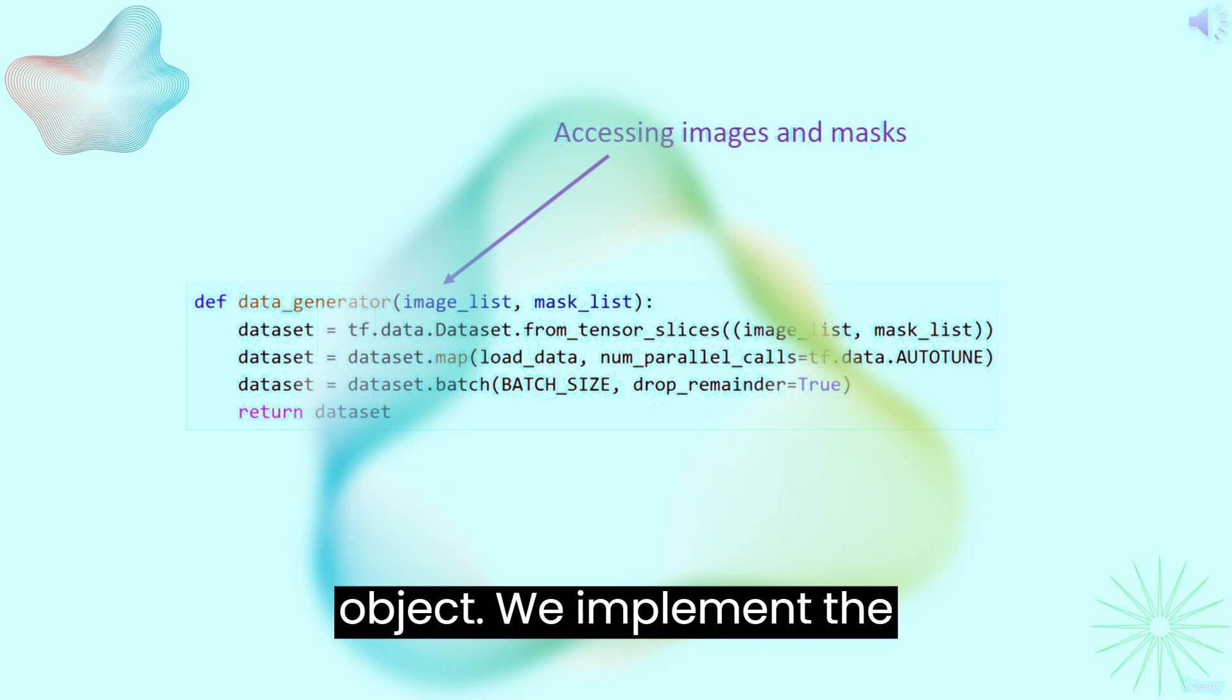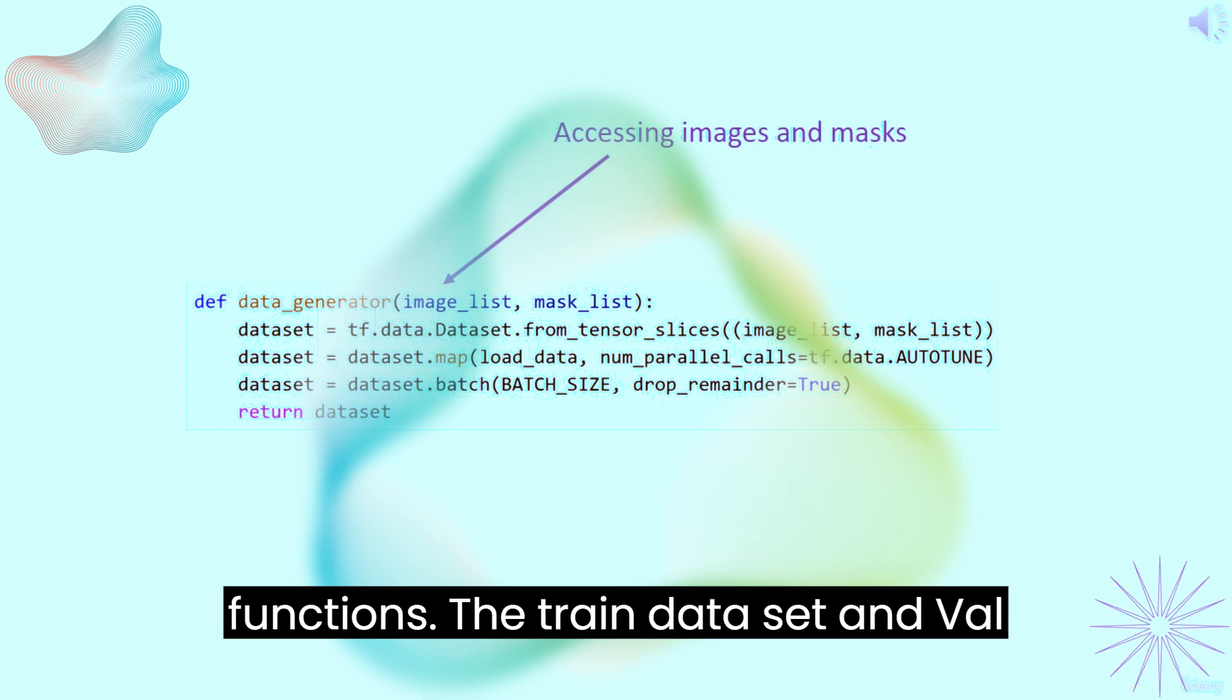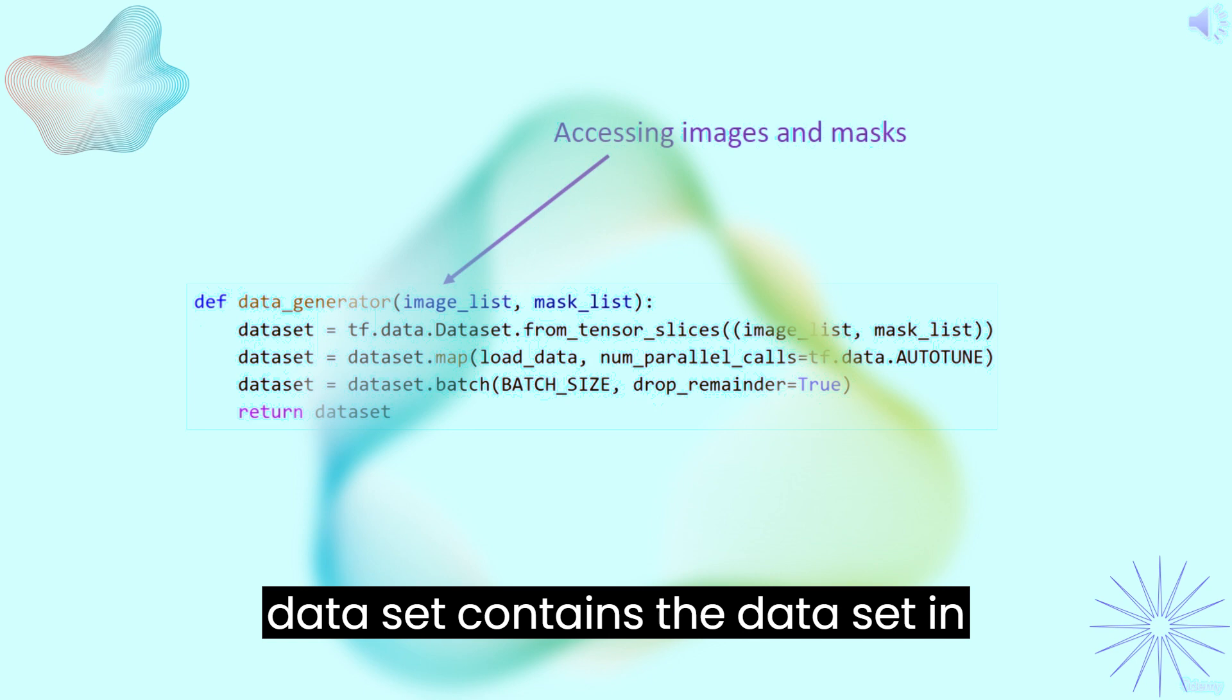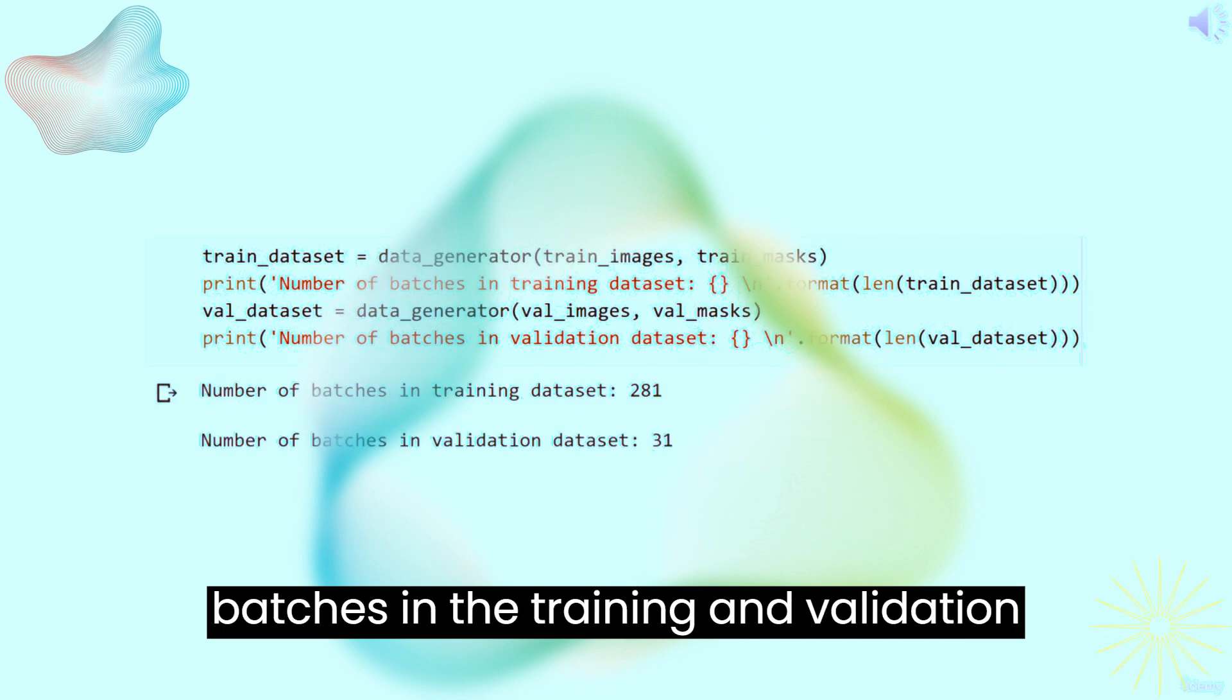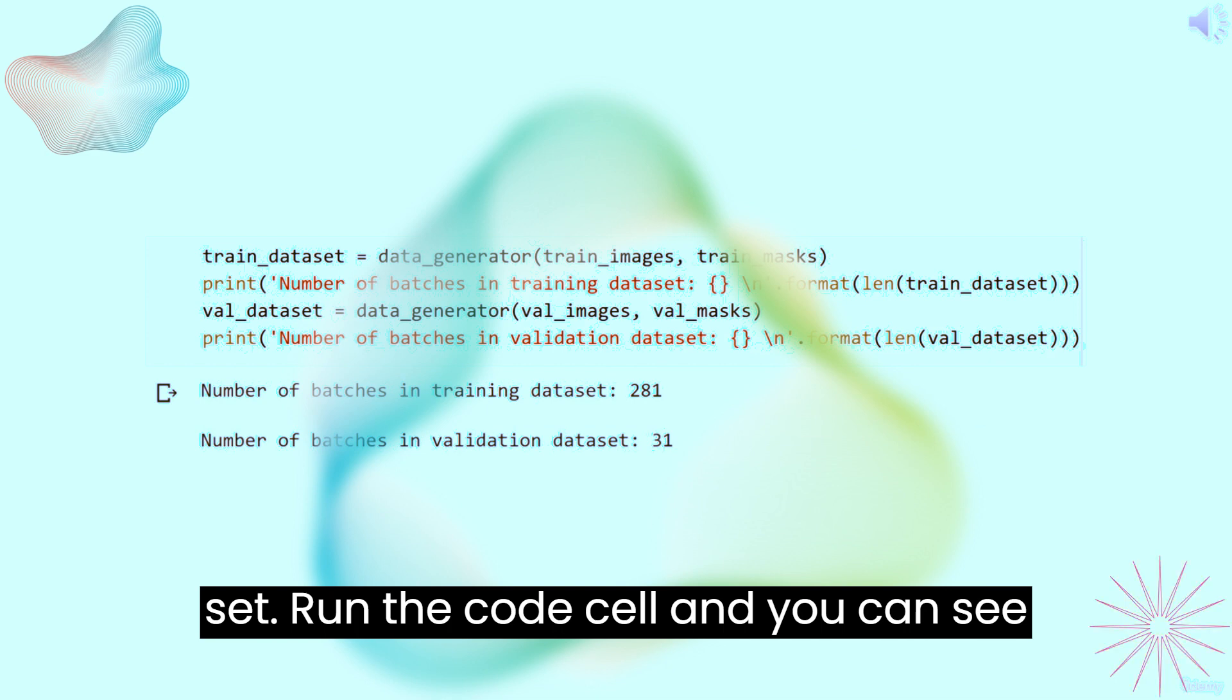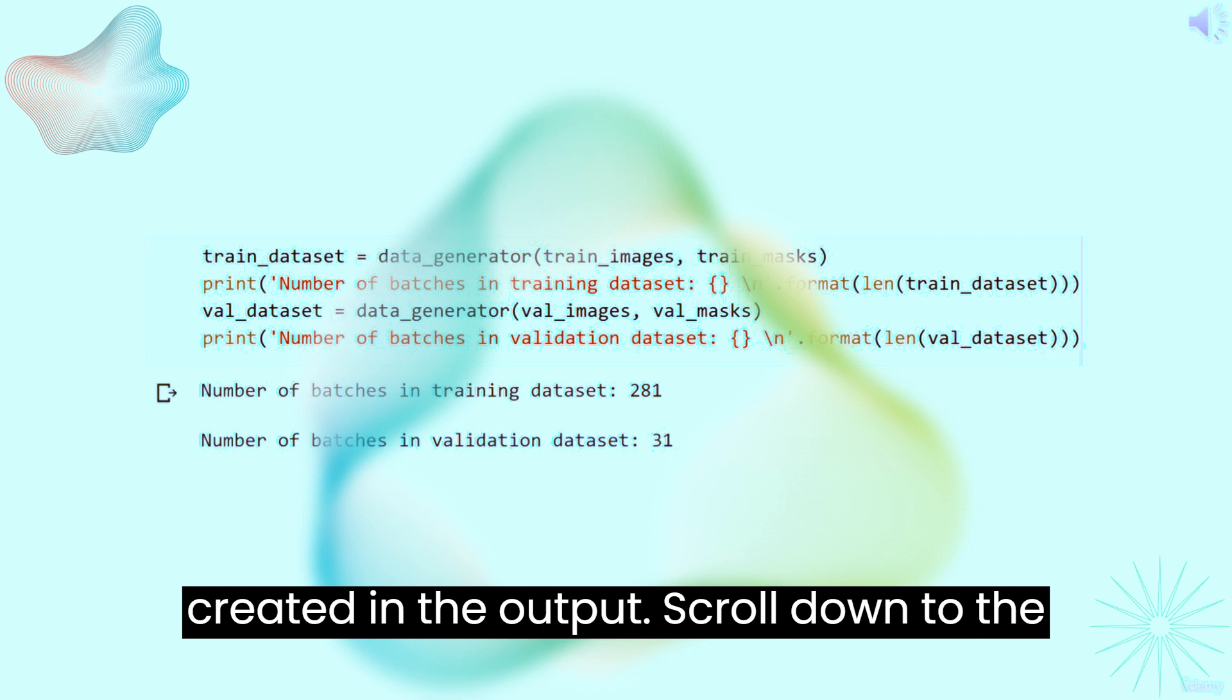At last, we implement the processes into the train and validation images using the above defined helper functions. The train_dataset and val_dataset contains the dataset in batches. Also, we display the number of batches in the training and validation set. Run the code cell, and you can see the number of batches of images that we created in the output.